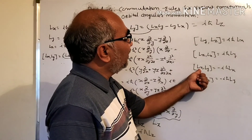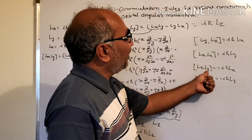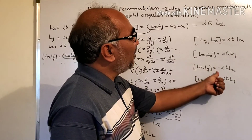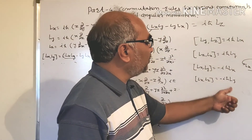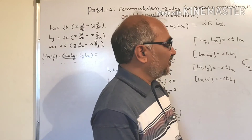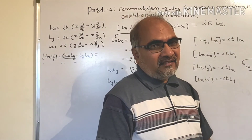Similarly, we can write the other commutation relations. The commutation relation [Ly, Lz] = iħLx, and [Lz, Lx] = iħLy. Due to cyclic rotation, [Lz, Ly] = −iħLx and [Lz, Lx] = −iħLy. These are the commutation relations between the components of orbital angular momentum.